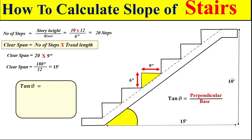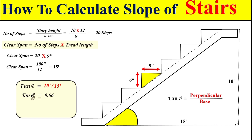Using the tangent approach of perpendicular divided by base, our perpendicular is 10 feet and our base is 15 feet. Solving these two terms, we get tan θ = 0.66. To calculate the angle θ, we take the tangent inverse of 0.66, which gives us the angle theta — the slope of the stair.